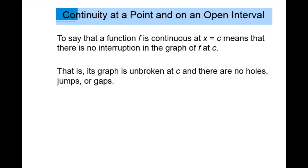Continuity at a point and on an open interval. To say that a function f is continuous at x equals c means that there is no interruption in the graph of f at c. That is, the graph is unbroken at c and there are no holes, jumps, or gaps. So we're going to look at a couple examples.